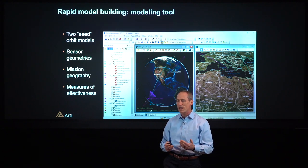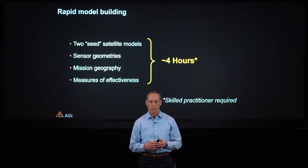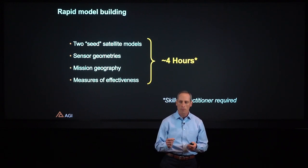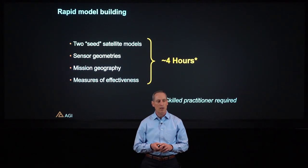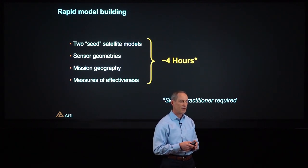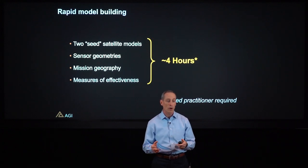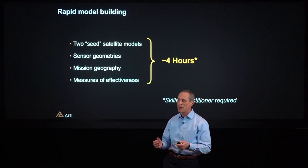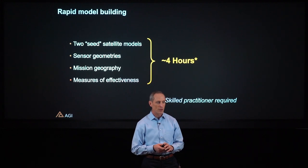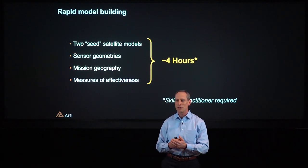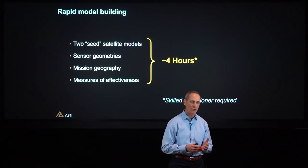Those are some of the fundamental aspects that go into the tools to build those models. When we did this process for this reference example, it took us about four hours. That entailed building two orbital designs representing seed satellites for our constellation designs, defining the sensor geometries, building the mission geography using those gridding tools, and applying the measures of mission effectiveness. In full transparency, the engineers who did this were very skilled in the tool and in this area. So another question that needs to be asked when evaluating whether you can do this process quickly is: how quickly can you train your staff and engineers to use these tools? But in general, this type of tool can be learned rapidly and used to create a model like this in the span of about four hours, not four weeks.